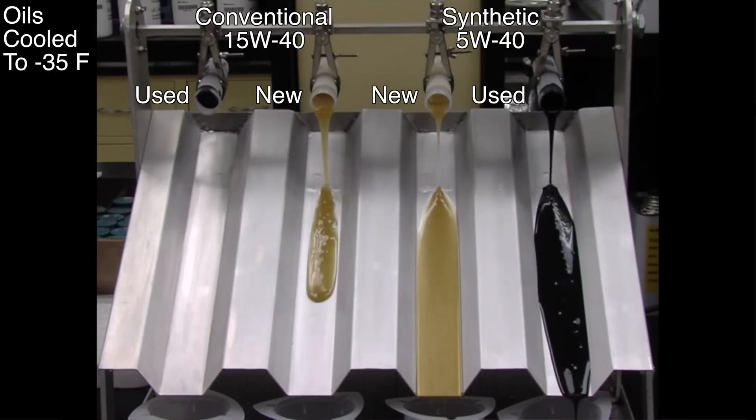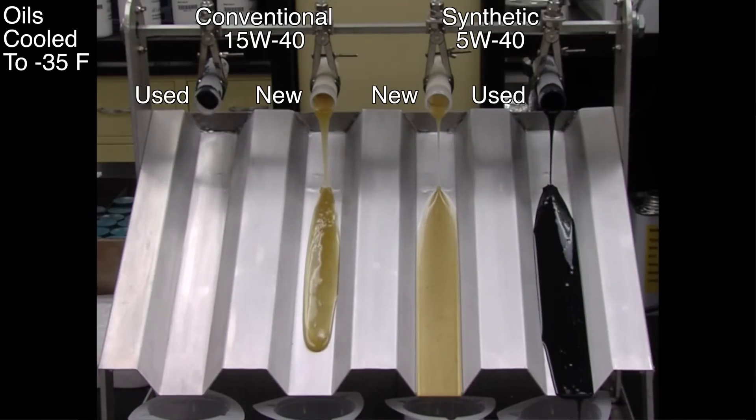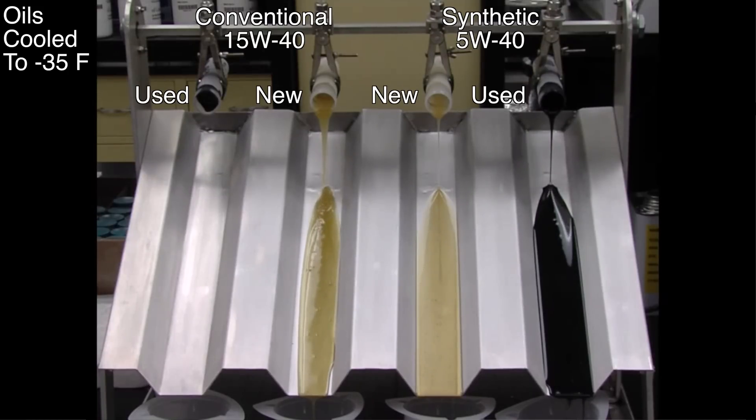However it's not the main purpose of this demonstration first off formulating a motor oil for 5W40 rating requires the use of a synthetic base oil as the synthetic base oil is what gives the oil the lower viscosity rating and second and perhaps more important to the viewer is that you can see the difference in viscosity between the used and new synthetic oil is very minimal whereas the difference in viscosity between the used and new conventional is very large.